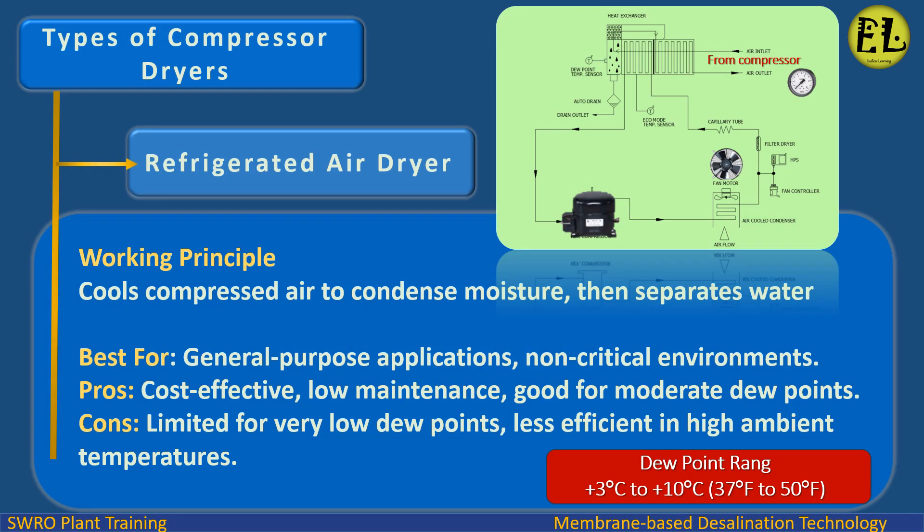Refrigerated air dryer. Working principle: cools compressed air to condense moisture, then separates water. Best for general purpose applications and non-critical environments. Pros: cost effective, low maintenance, good for moderate dew points. Cons: limited for very low dew points, less efficient in high ambient temperatures. Dew point range: 3°C to 10°C (37°F to 50°F).